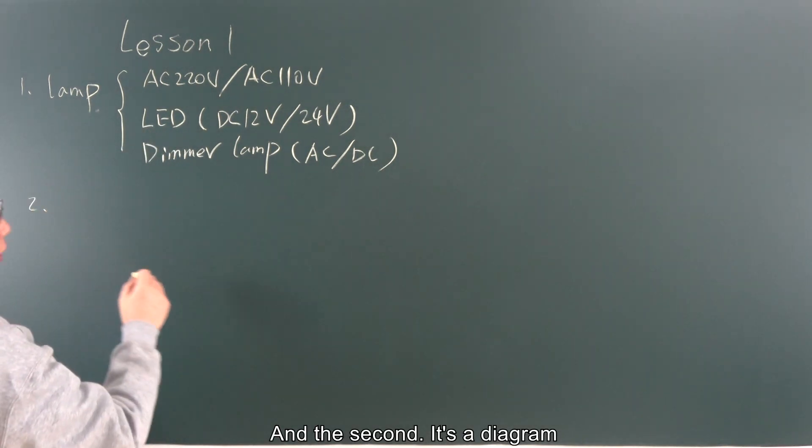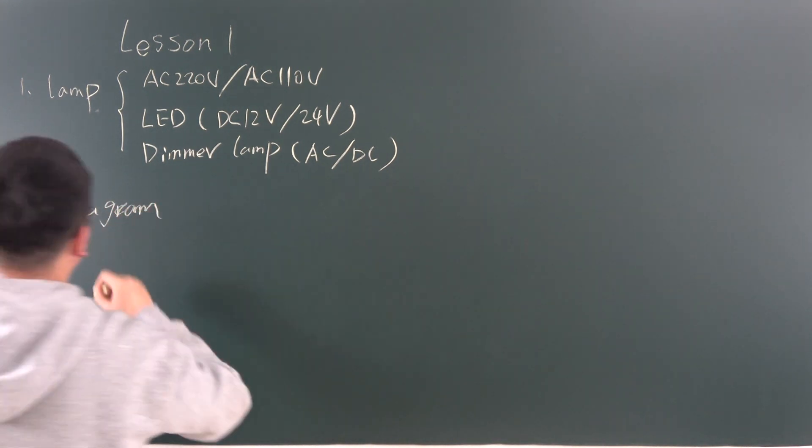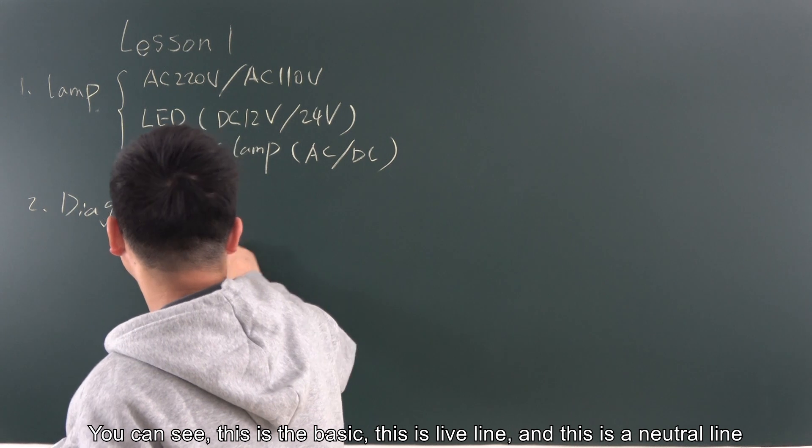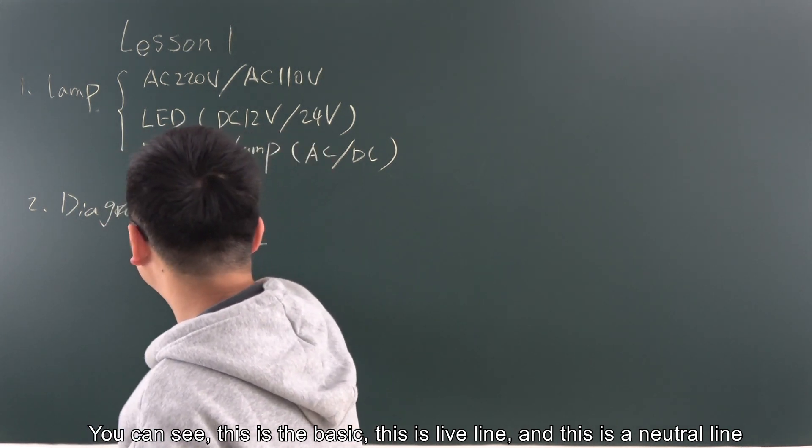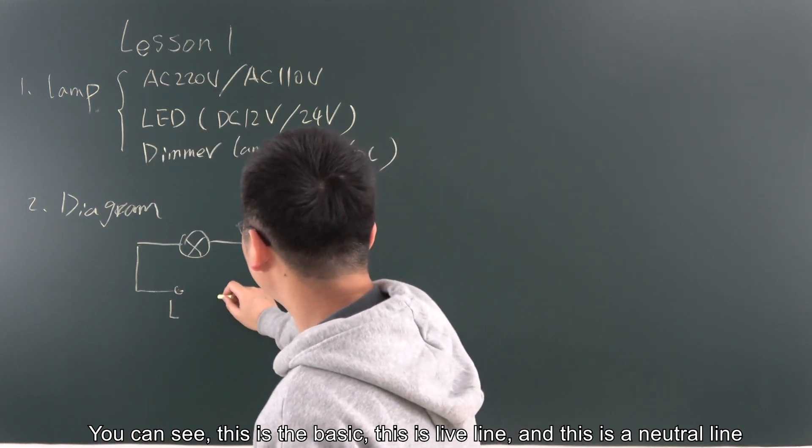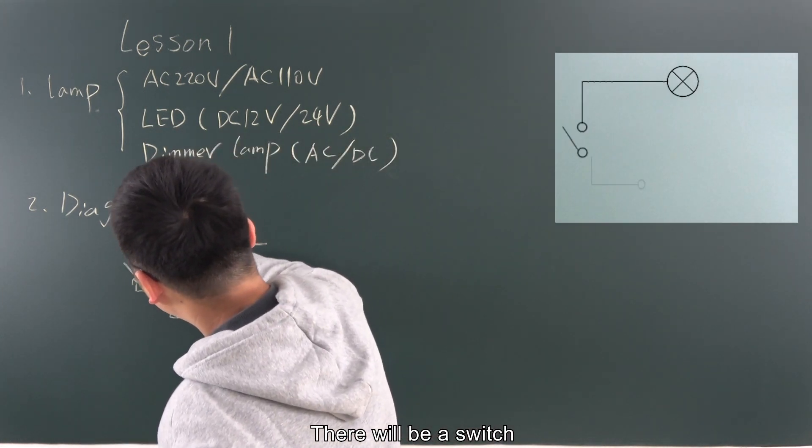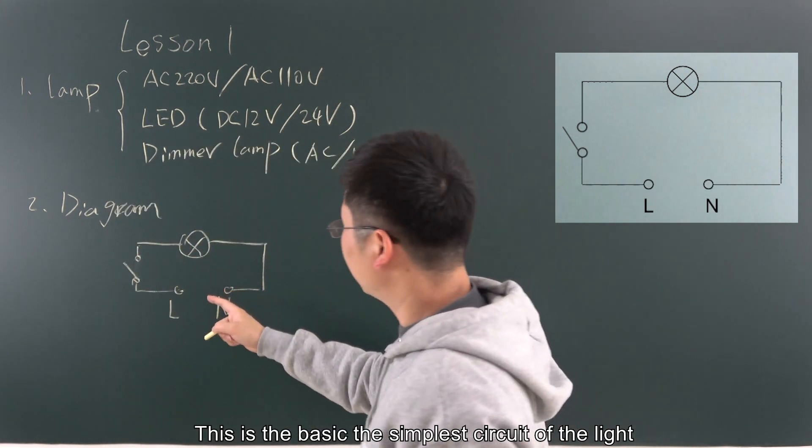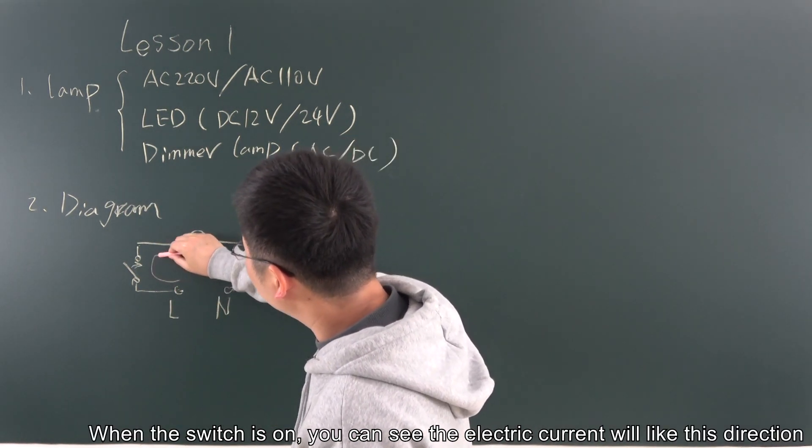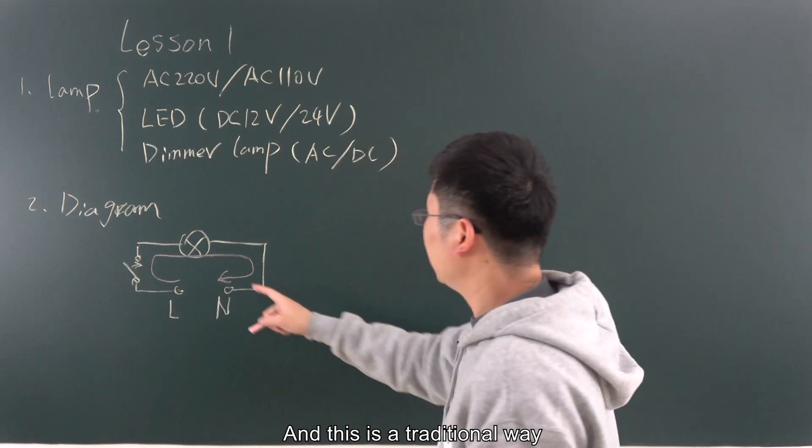And the two is the diagram. You need the light on. Now, you can see this is the basic. This is the live line, and this is the neutral line. And there will be a switch. This is the simplest circuit of the light. When the switch is on, you can see the current will like these directions. So the light will be on. And this is the traditional way.